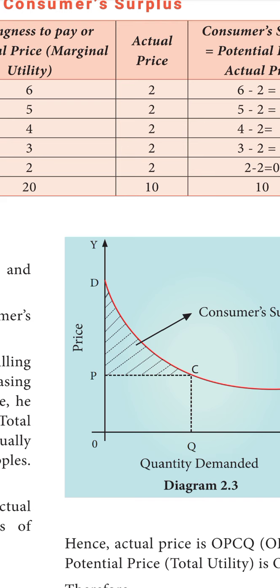In the diagram, OD represents what you are ready to pay — that is the potential price of 20 rupees. OP represents what you actually pay — the actual price of 10 rupees. OD minus OP equals PD, which is your consumer surplus. So OD is the potential price, OP is the actual price, and PD is the consumer surplus of 10 rupees.